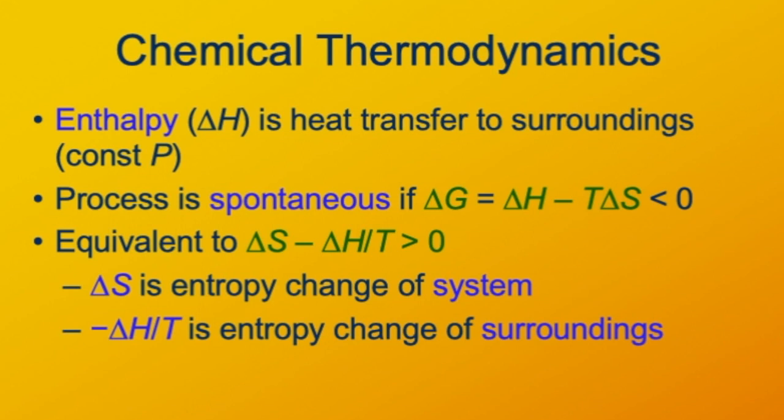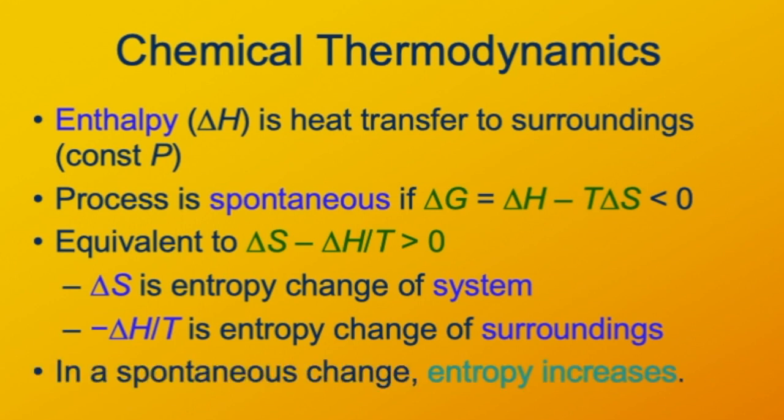If delta S is positive, that means that the system's entropy is increasing. If minus delta H over T is positive, that means that the entropy of the surroundings is increasing. So you add those together, the delta S minus delta H over T, that is the entropy change of the universe in any chemical process. So this is to say that if the Gibbs free energy of the system is decreasing in a constant pressure process, then the entropy of the universe is increasing. It's just a way of breaking things down so that we look at the system only and not have to worry about explicitly talking about the surroundings.